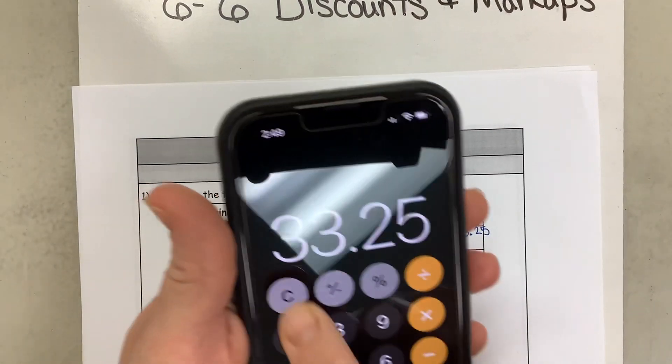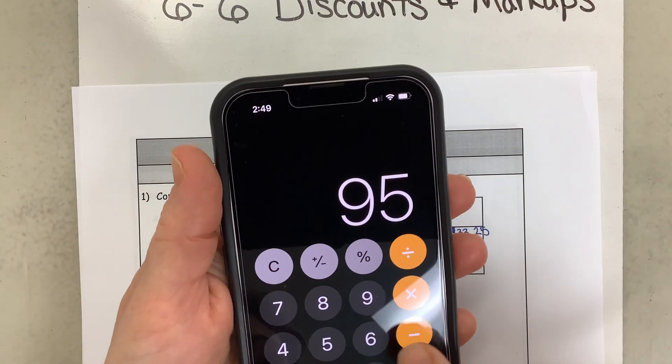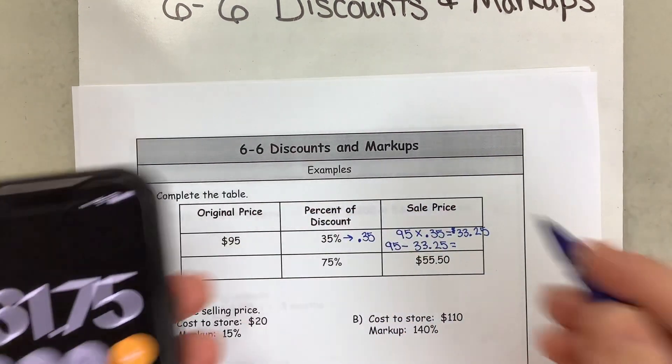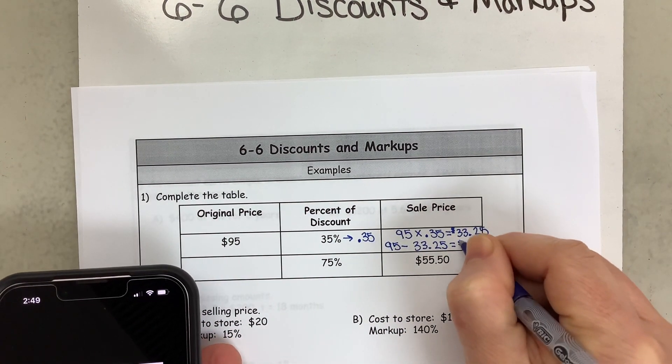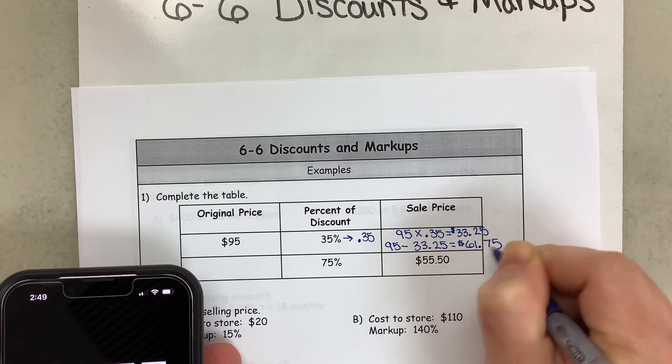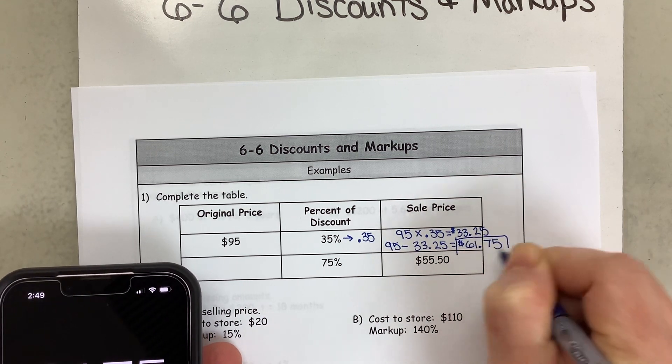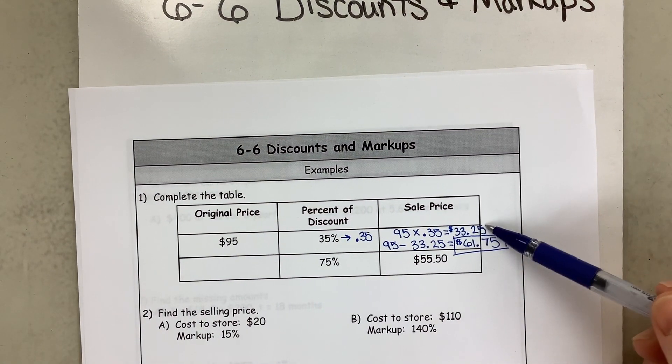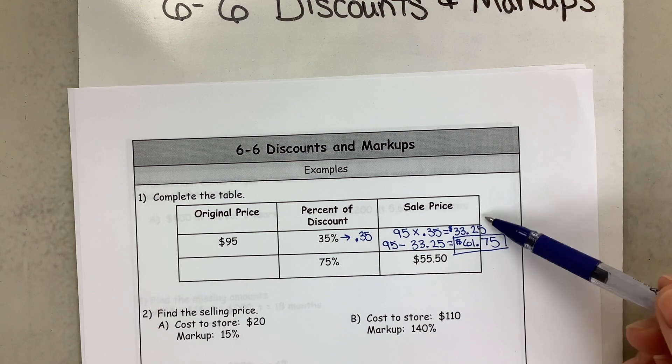To find what we're paying, we now need to take the $95 minus this amount here, so the $33.25. And when we do that, so we're going to take $95 minus $33.25, we have paid for this item $61.75. You have to be very careful that the amount you find here is not what you consider the sale price. This is your discount.